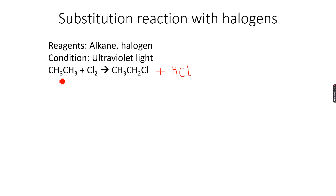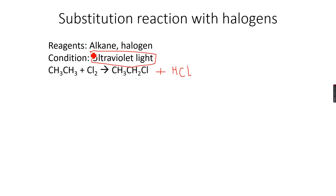From ethane we get chloroethane, and chloroethane has one less hydrogen than ethane, so you know this reaction has taken place. This reaction only takes place in the presence of ultraviolet light. When we do the free radical substitution mechanism in the next slide, we will understand the importance of this ultraviolet light.